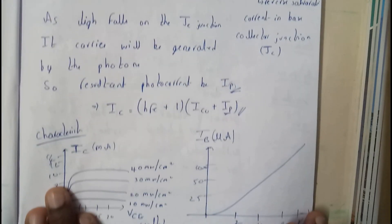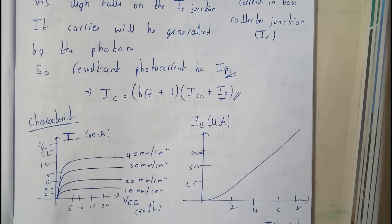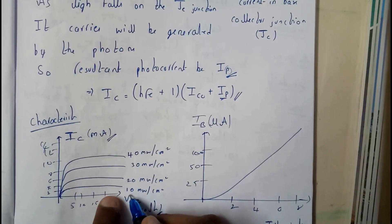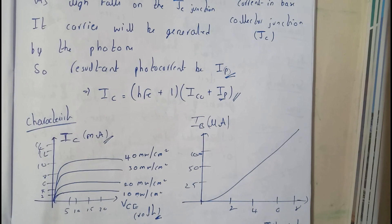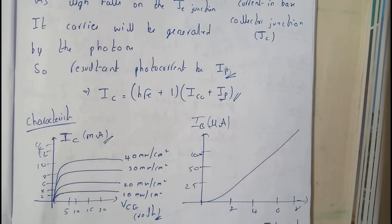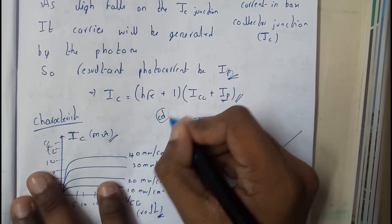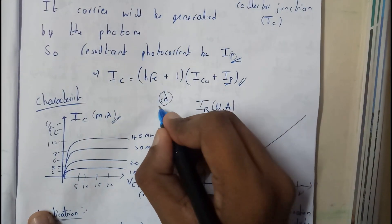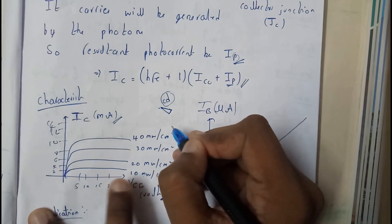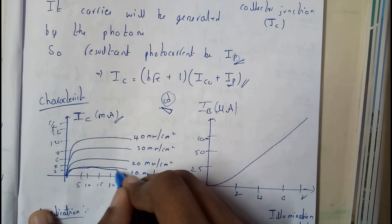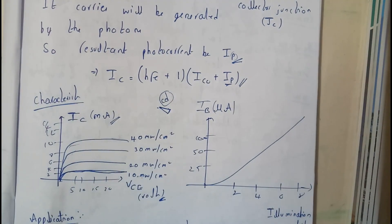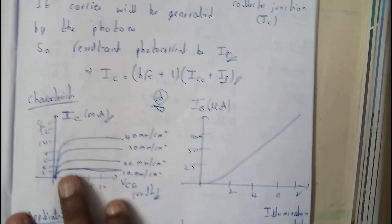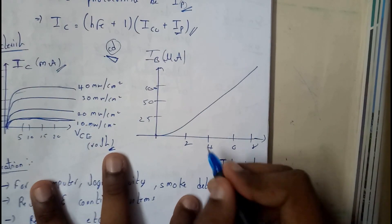Now let's look at the characteristic curves. The unit of light is candela, abbreviated as cd. As we increase the voltage at a constant candela value — say 10 cd, 20 cd, 30 cd, 40 cd — the current varies accordingly, showing slight changes for each illumination level. This gives us the first characteristic: voltage versus current at different illumination levels.